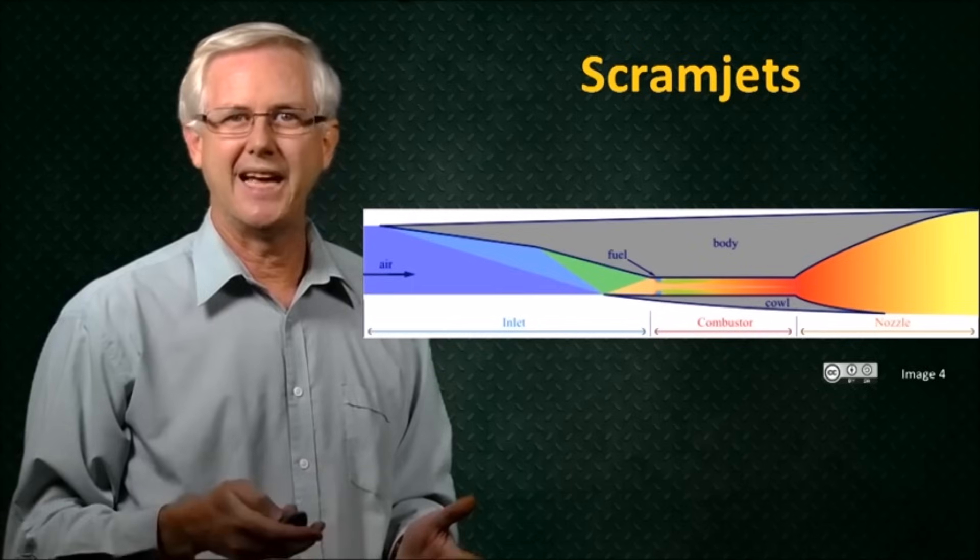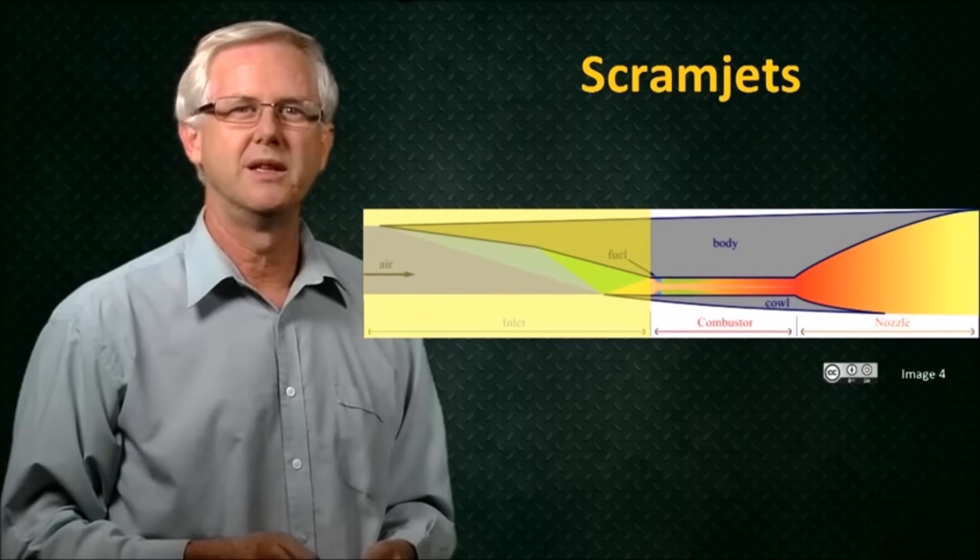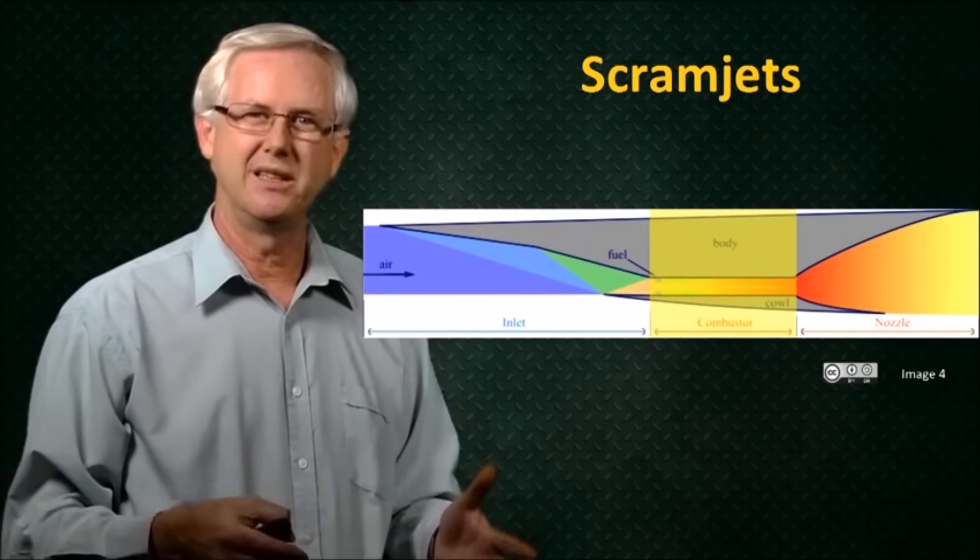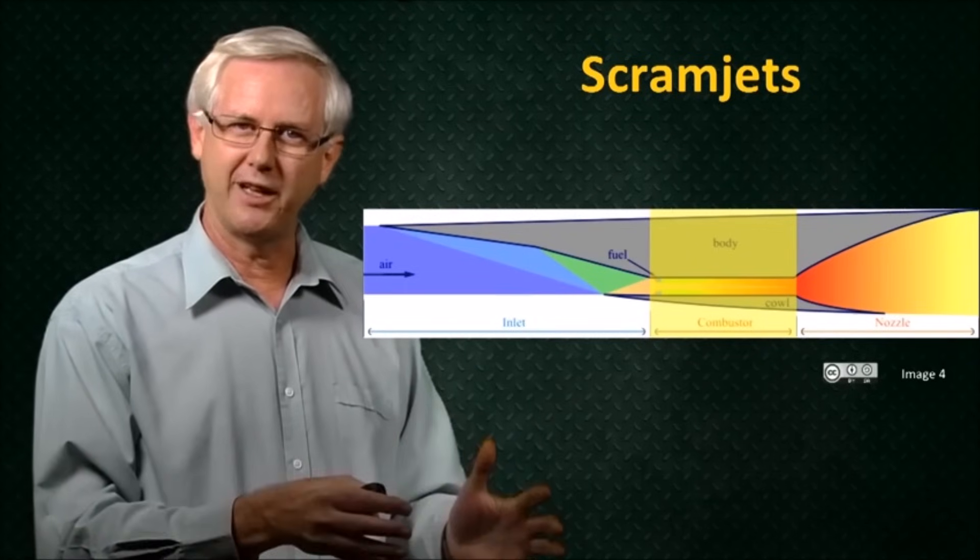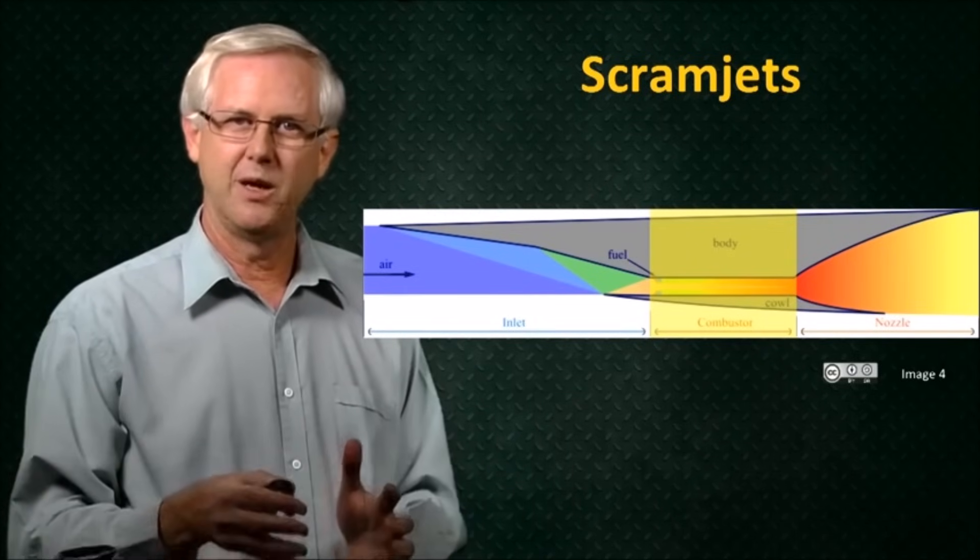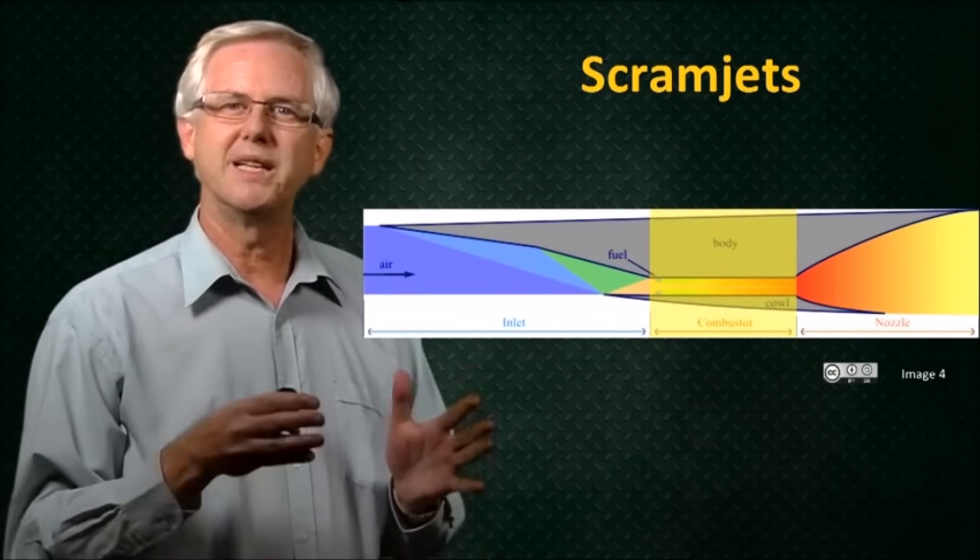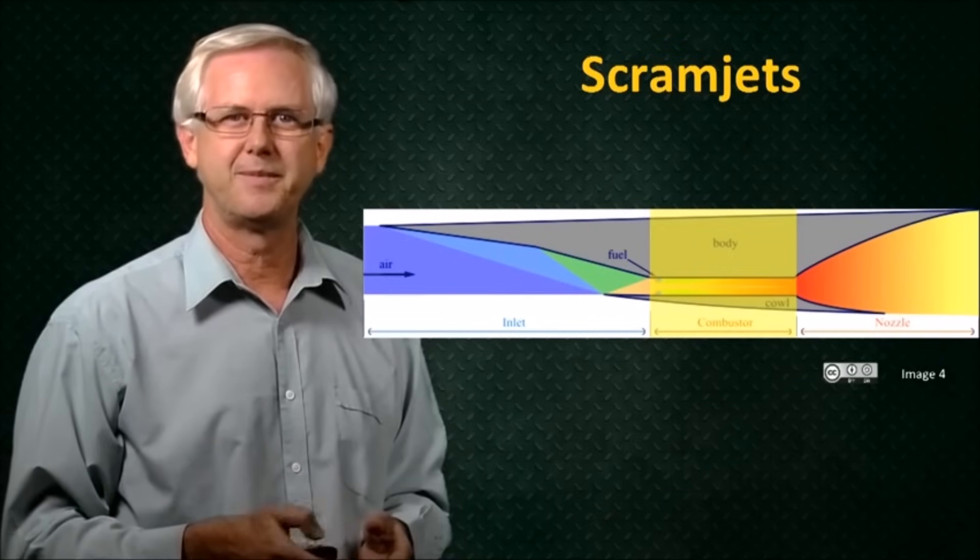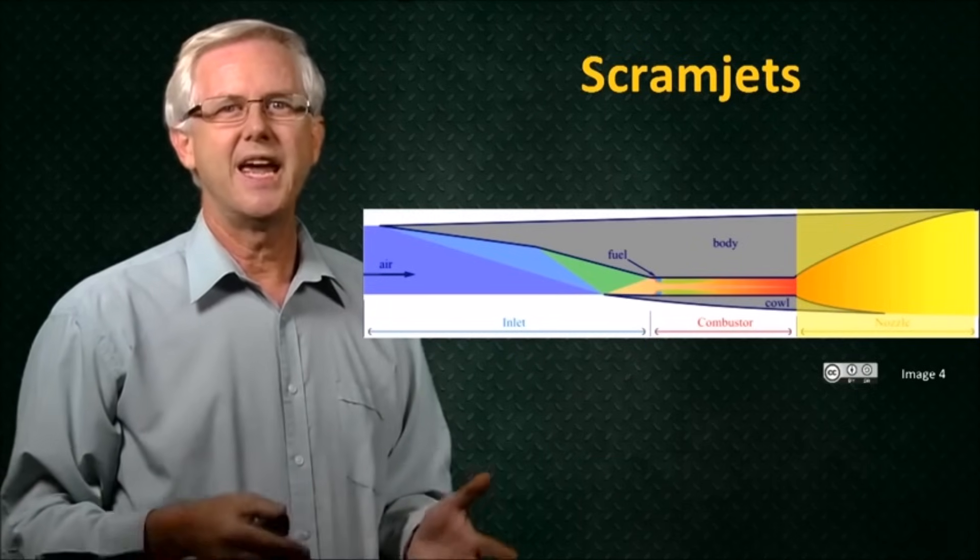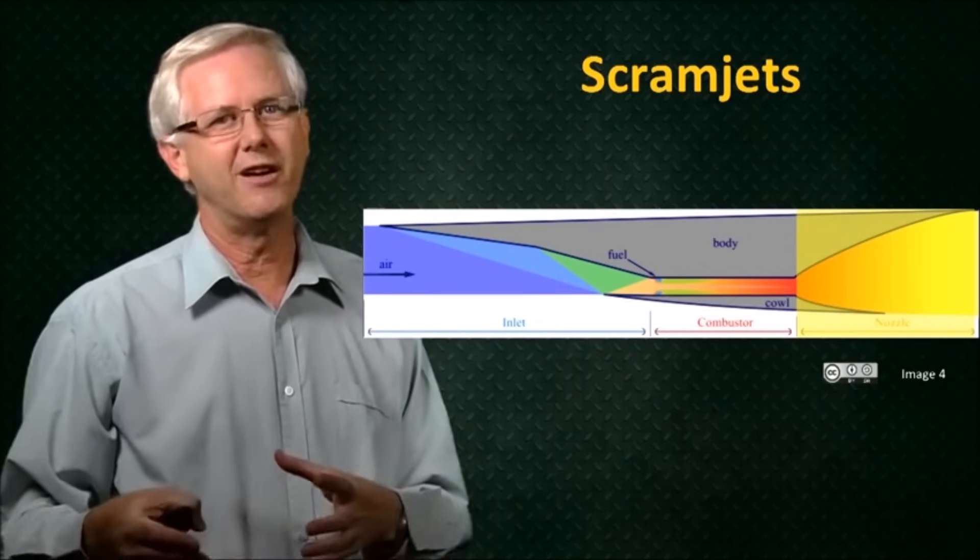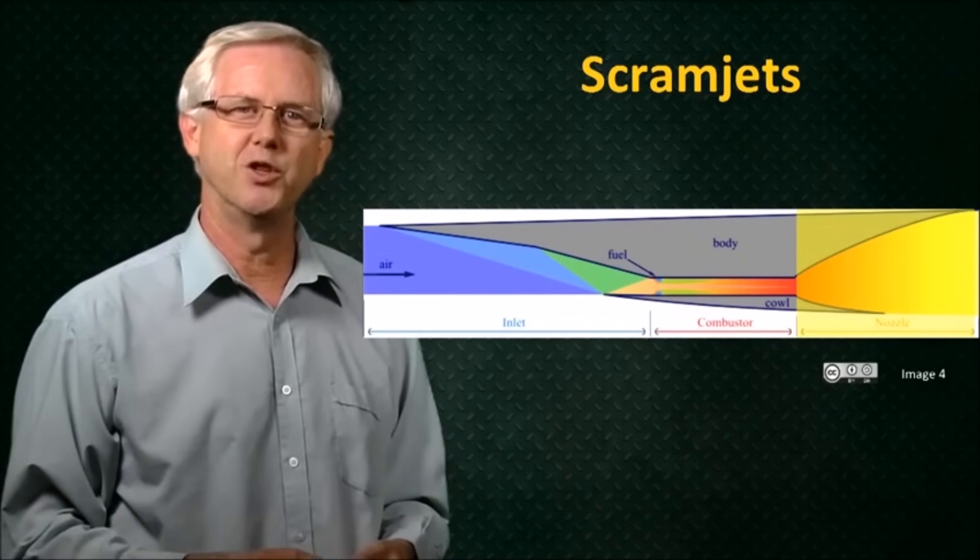So a scramjet engine has an inlet where we slow the flow down, raising its pressure and temperature. We have a combustor where we inject some fuel. The flow is still traveling supersonically through the combustion chamber where the fuel burns and releases its heat. Maybe it slows down a little, but it still stays at a supersonic speed. And then we exhaust the gas through a nozzle. Again, if we can get the gas coming out of the engine with a higher momentum than it came into the engine, then we can potentially produce some thrust.